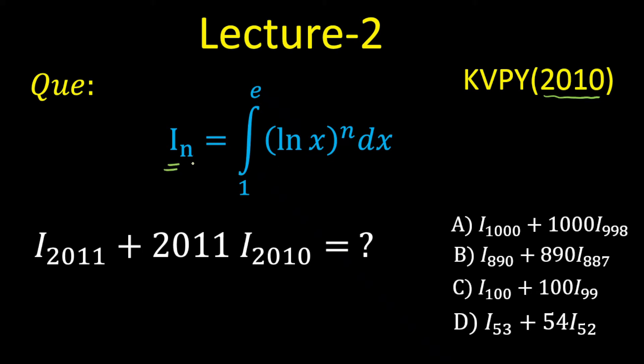Now the integration is given as I of n. That means it is dependent on the index n. Now the question is, this value for index n equals 2011 and for index n equals 2010, this value will be equal to which option? So let's start.